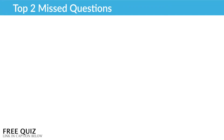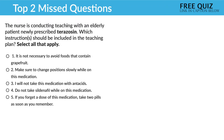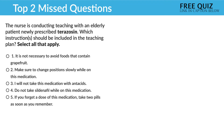Now, for the top two missed questions for the urinary section. Question number one: The nurse is conducting teaching with an elderly patient newly prescribed terazosin. Which instructions should be included in the teaching plan? Select all that apply.